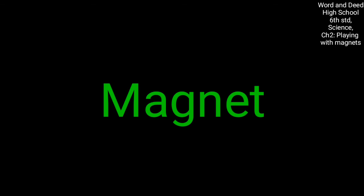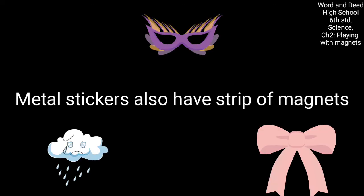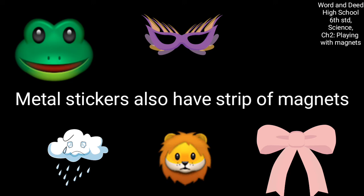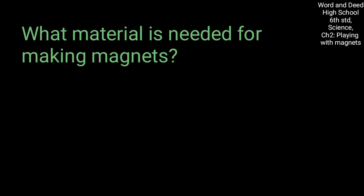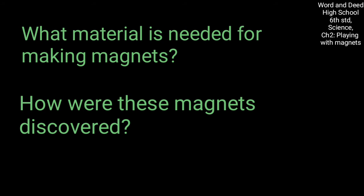Similarly, the metal stickers also have a magnet at the back of each metal sticker, at the back of each sticker, so that they can stick to the iron doors. And some of the questions I would like to ask you: what material is needed for making magnets? How were these magnets discovered? Let us try to find answers for these questions now.